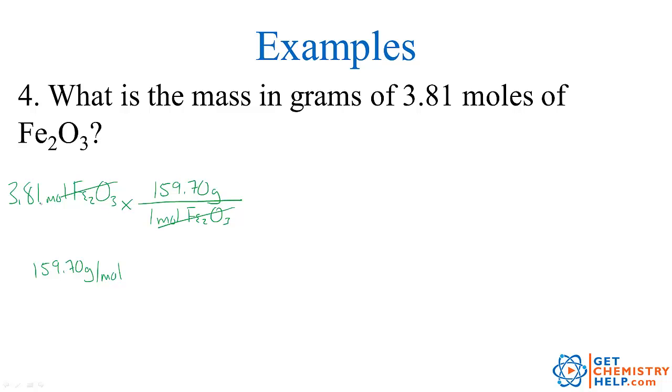159.70 grams is a mole of iron 3 oxide. So our moles cancels. And we multiply through. This has three significant digits. This has five. So our answer is going to have three. And I got 608 grams. So that's the mass of 3.81 moles of iron 3 oxide.